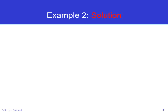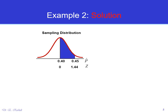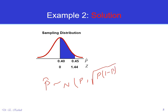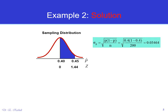So we can use the normal distribution to solve this. We know P̂ follows a normal distribution, and we are looking for the probability that P̂ is between 0.4 and 0.45 — the blue shaded area. P̂ follows a normal distribution with mean P and standard deviation √(P(1−P)/N). Computing the standard deviation: the standard deviation of P̂ is 0.0346. So P̂ ~ Normal(mean = 0.4, SD = 0.0346).